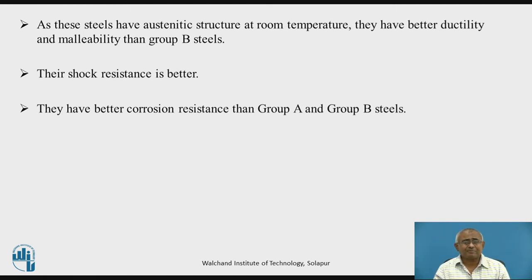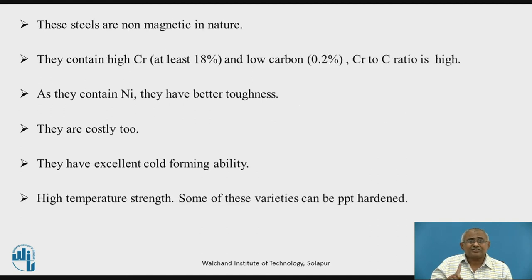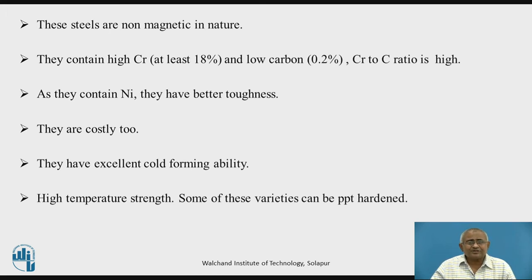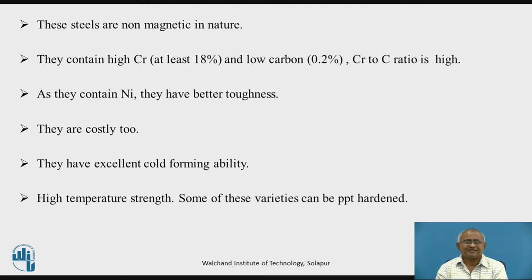That is martensitic and ferritic varieties of stainless steels. These steels, as they are austenitic even at room temperature and even at high temperature, are non-magnetic. This is the only variety of stainless steel which is non-magnetic. As these steels contain high chromium and very low carbon, their chromium in solid solution is high. They contain nickel, due to which they have better toughness and shock resistance. But the presence of nickel makes these steels costly.